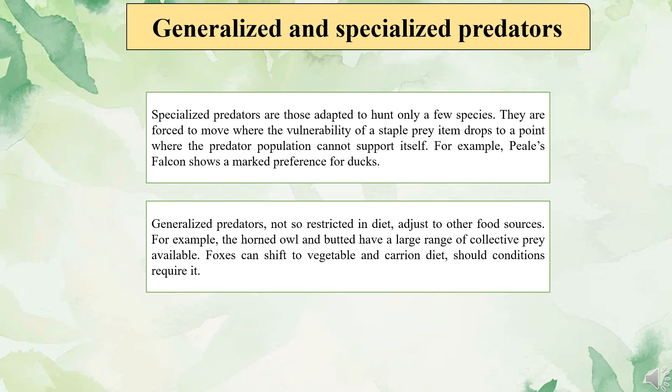Generalized predators are not so restricted in diet and adjust to other food sources. For example, the horned owl and the butcher hawk have a large range of collective prey available. Foxes can switch to a vegetable and carrion diet when conditions require it.